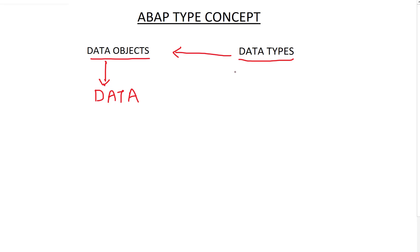There is also a concept called predefined data types, where the SAP system kernel has certain data types already predefined. So whenever I'm creating a data object, I can refer to these predefined types. Alternatively, I can define my own data types in the program. If you want to define your own data type, the keyword we use is TYPES.